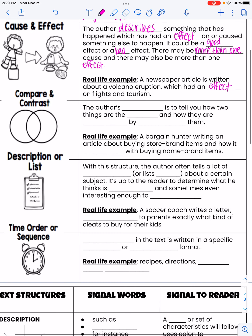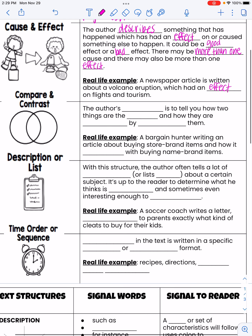The third type of text structure is compare and contrast. This is where you see that Venn diagram — that's really important. The author's purpose is to tell you how two things are the same and how they are different by comparing them. A real-life example would be a bargain hunter writing an article about buying store-brand items and how it compares with buying name-brand items.